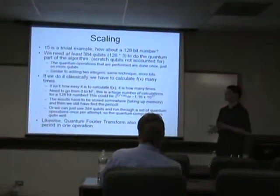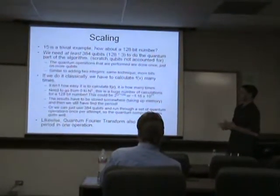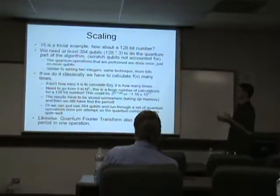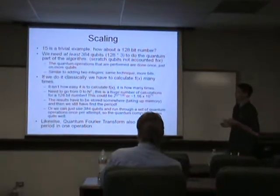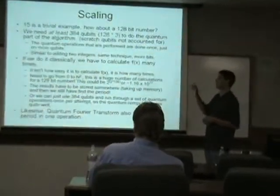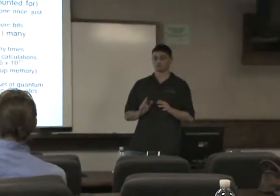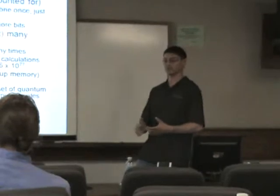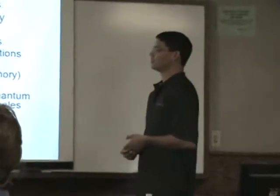So 15 is a pretty trivial example. But how about a larger number, 128-bit number. We need at least 384 qubits, which is quite a bit. And there's still quite a ways to go to physically realize that.